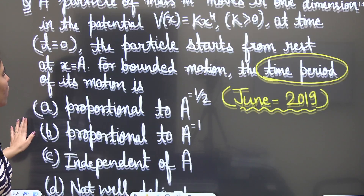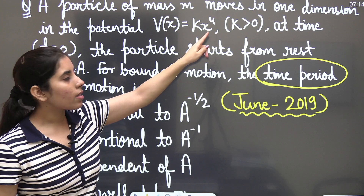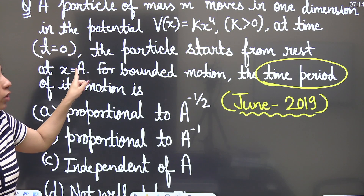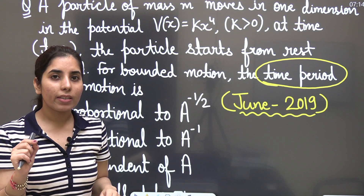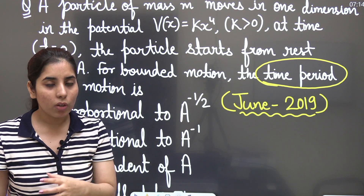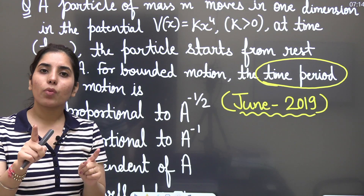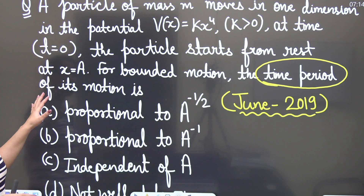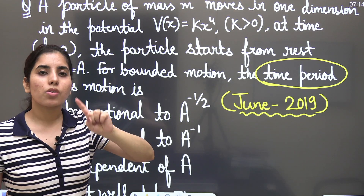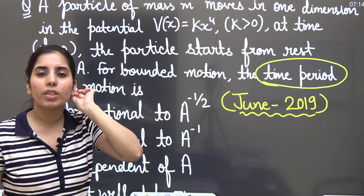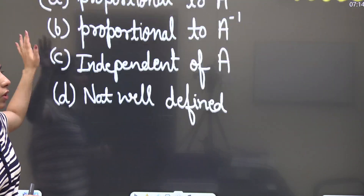Reading the question further: at time t = 0 the particle starts from rest, which means kinetic energy is zero at that moment. So the total energy equals the potential energy at t = 0. We will use the condition that potential energy equals total energy at t = 0, because the particle is at rest. I hope this point is clear to all of you.